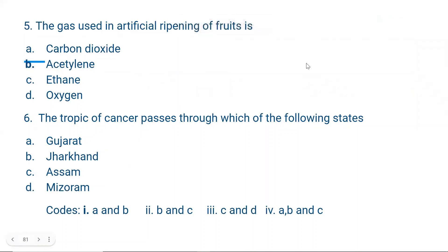Question number 5. The gas used in artificial ripening of fruits is: A. Carbon dioxide, B. Acetylene, C. Ethane, or D. Oxygen. Correct answer is B — acetylene. Acetylene and ethylene are the same compound by different names, and this is the gas used to ripen fruits. Sometimes it is given artificially, and sometimes it is naturally produced by a ripe fruit, which then ripens all the surrounding fruits — which is the basis of the old saying that one ripe fruit ripens others nearby.